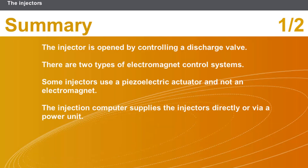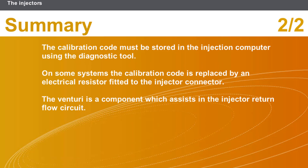In this section we covered the following points: the injector is opened by controlling a discharge valve; there are two types of electromagnet control system; some injectors use a piezoelectric actuator and not an electromagnet; the injection computer supplies the injectors directly or via a power unit; the calibration code must be stored in the injection computer using the diagnostic tool; on some systems the calibration code is replaced by an electrical resistor fitted to the injector connector; the venturi is a component which assists in the injector return flow circuit.